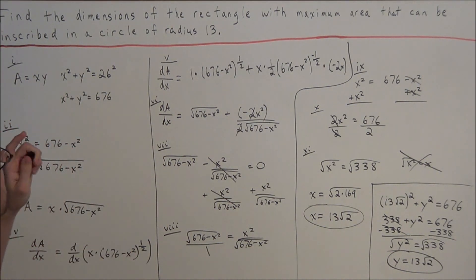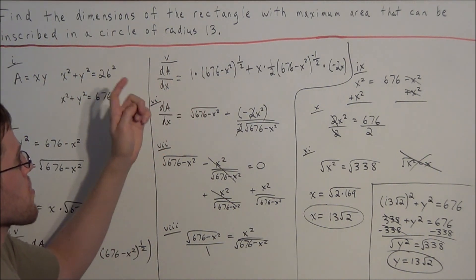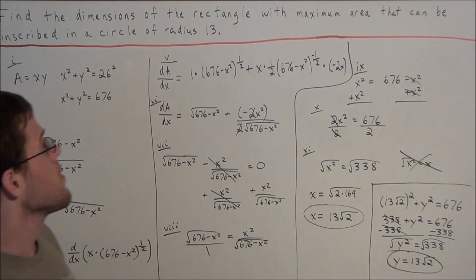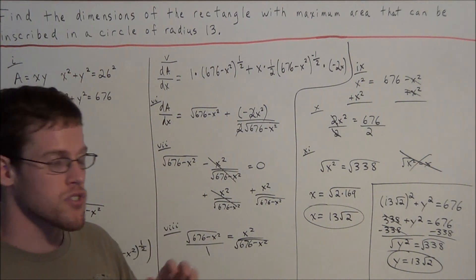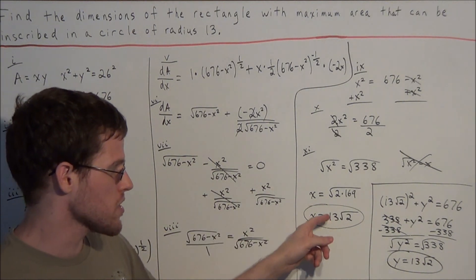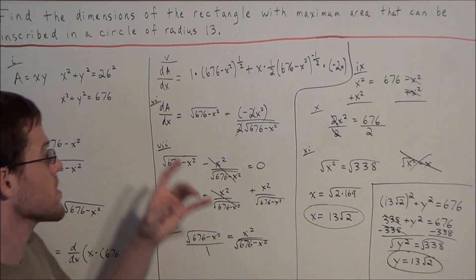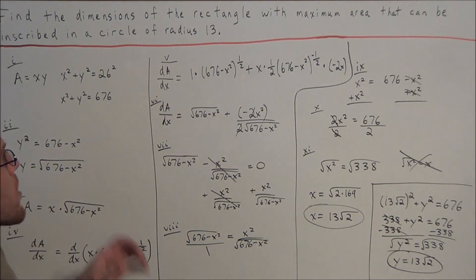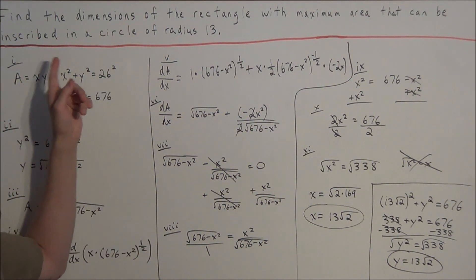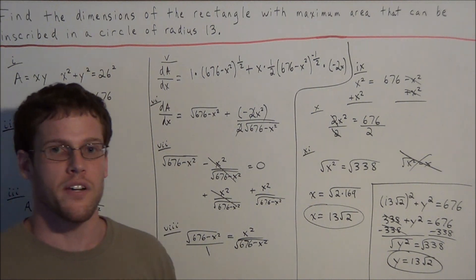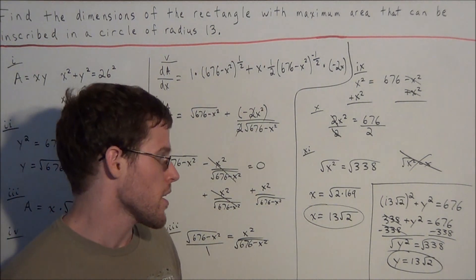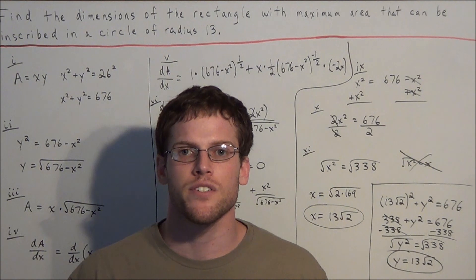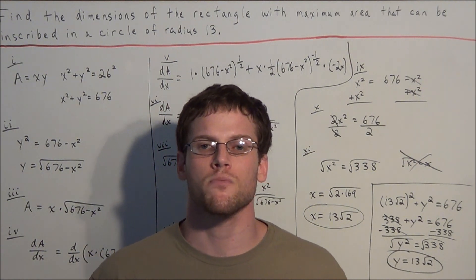The answer to this problem: the dimensions of the rectangle with maximum area inscribed in a circle of radius 13 — the rectangle is a square with side length 13 radical 2. All sides of the square are 13 radical 2. That is the rectangle with the greatest area that can be inscribed in a circle with radius 13. This concludes this video on applications of differentiation. Thank you all for watching and I hope this was helpful.